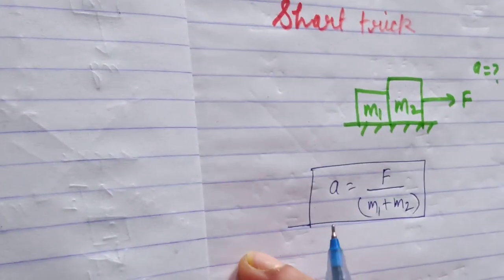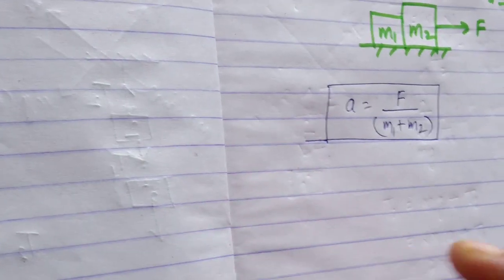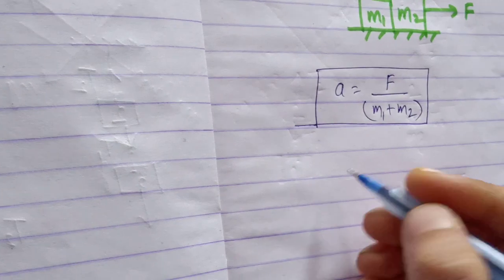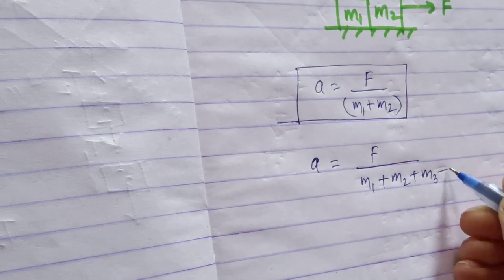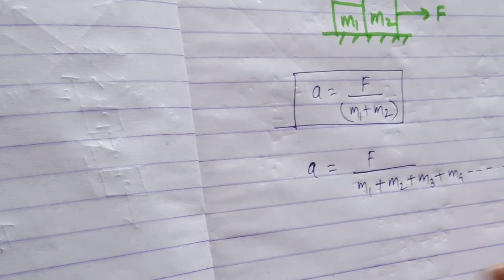is the short trick. If you have more than two blocks, a equals F divided by (m1 plus m2 plus m3 plus m4) and so on. You find the acceleration by this. I hope you understand the short trick. Now